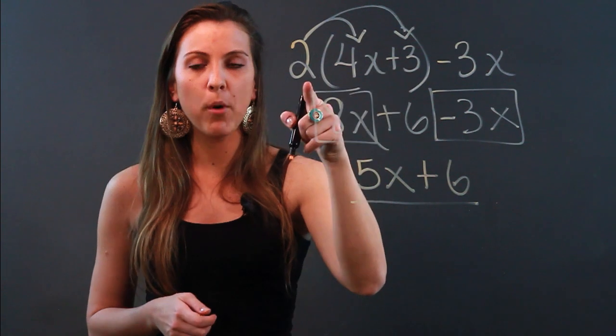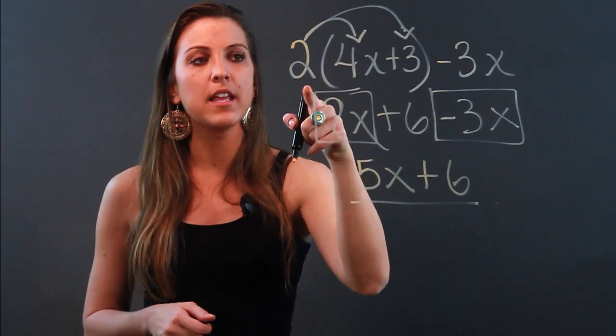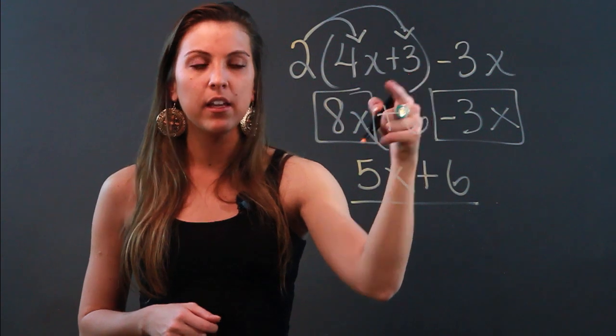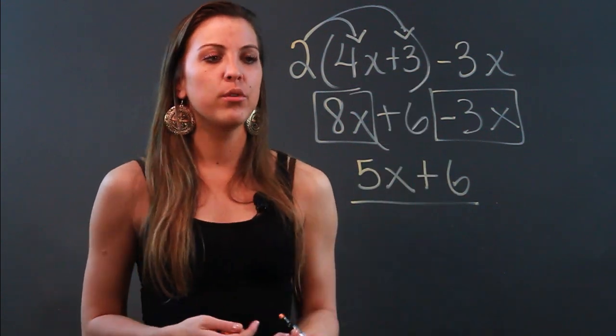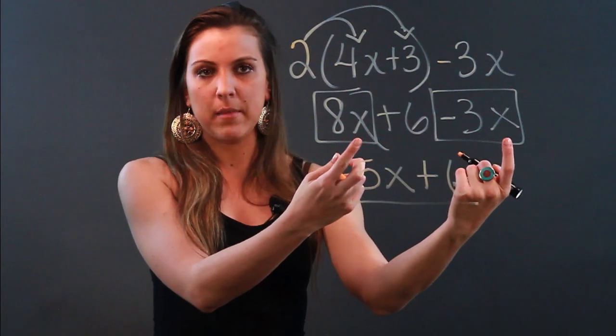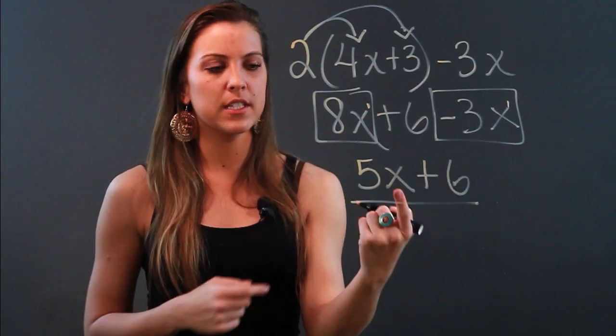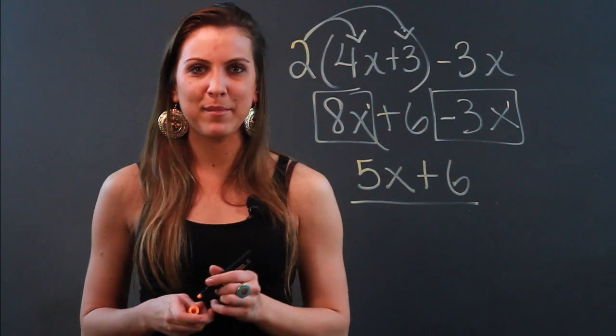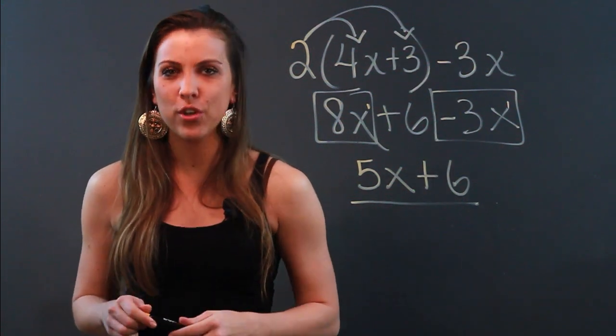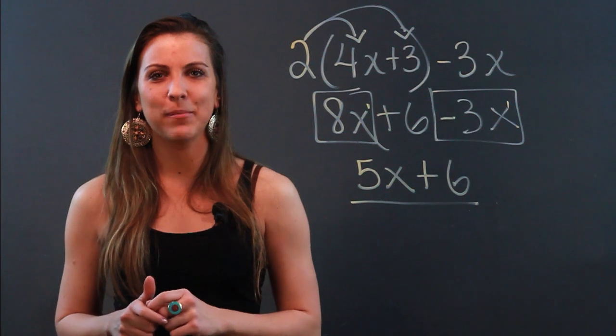So to distribute, you multiply the number outside of the parentheses by each term that's inside. And to combine like terms, you look for anything that has the same variable, same exponent. And these both have an imaginary 1 - that's why I say same exponent. You combine their coefficients, keep their variable. My name is Maria and I just showed you how to do the distributive property and combine like terms.